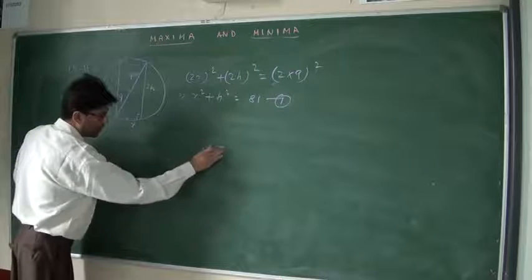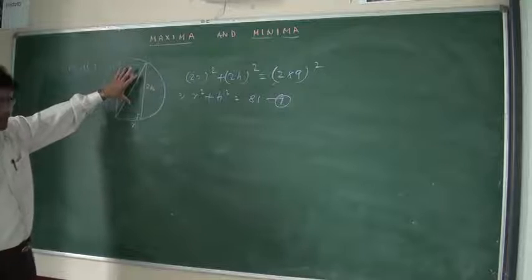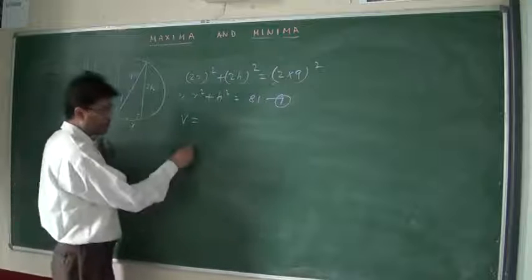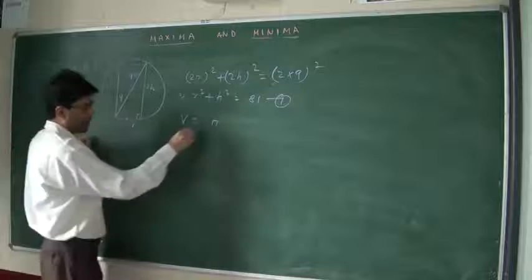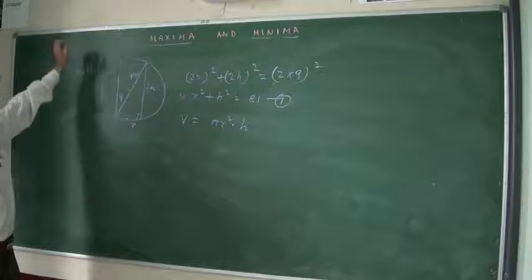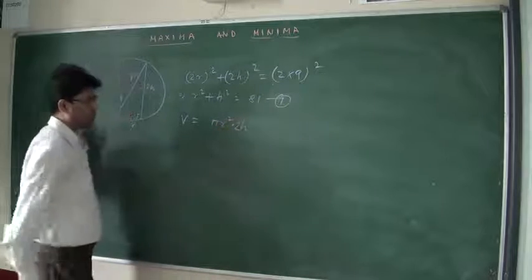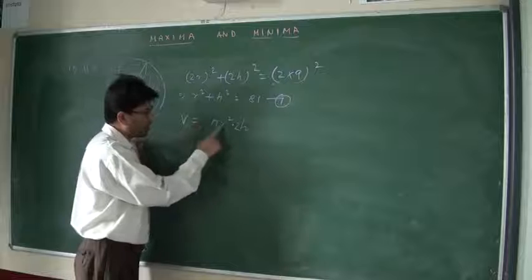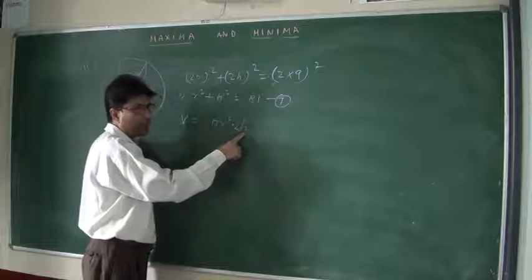You have to use this condition to find the height of the cylinder so that the volume of the cylinder is maximum. The volume of the cylinder formula is: volume = base area × height = πr² × h. Here the height is 2h, so volume = πr² × 2h. The volume function contains 2 variables, r and h, so you have to eliminate one variable to find the derivative.